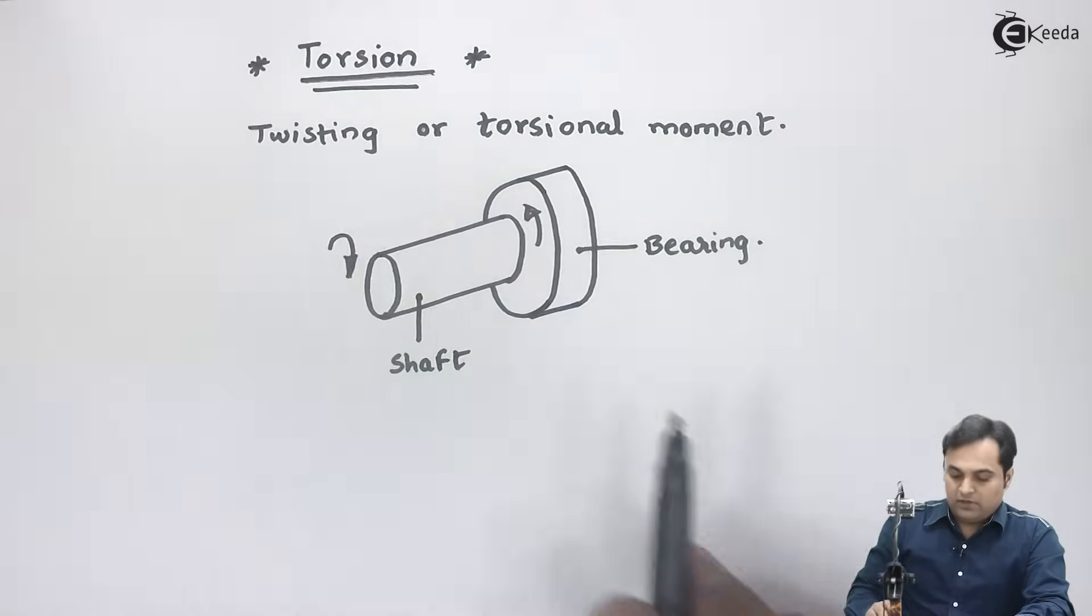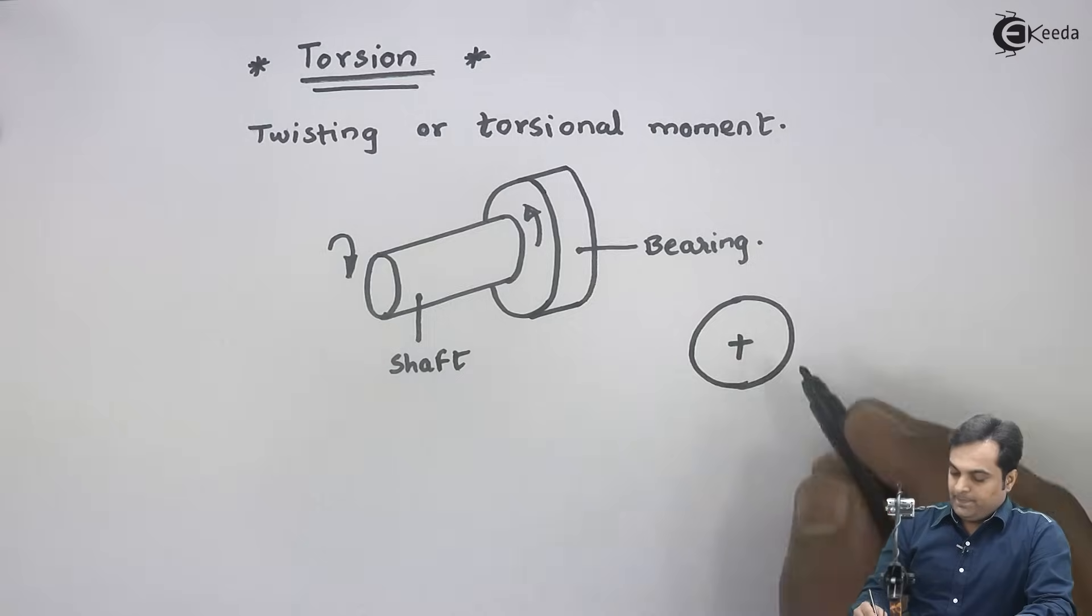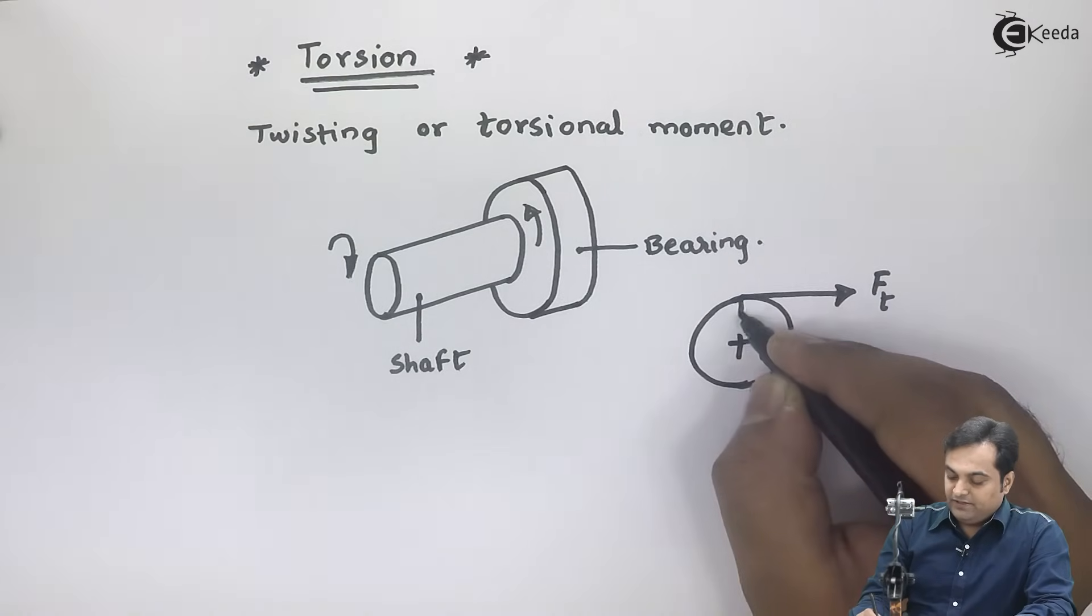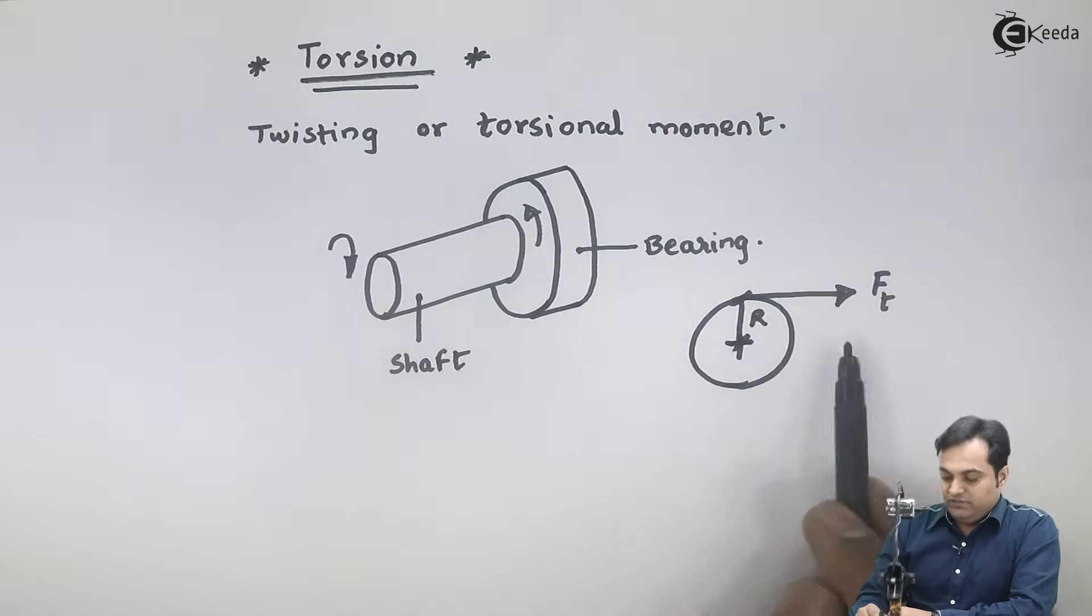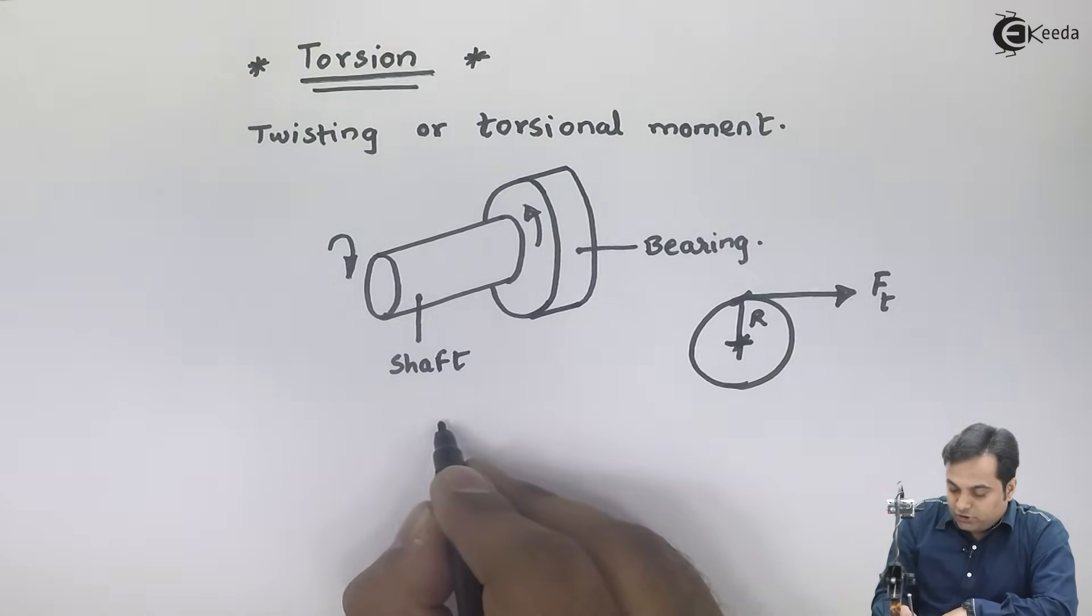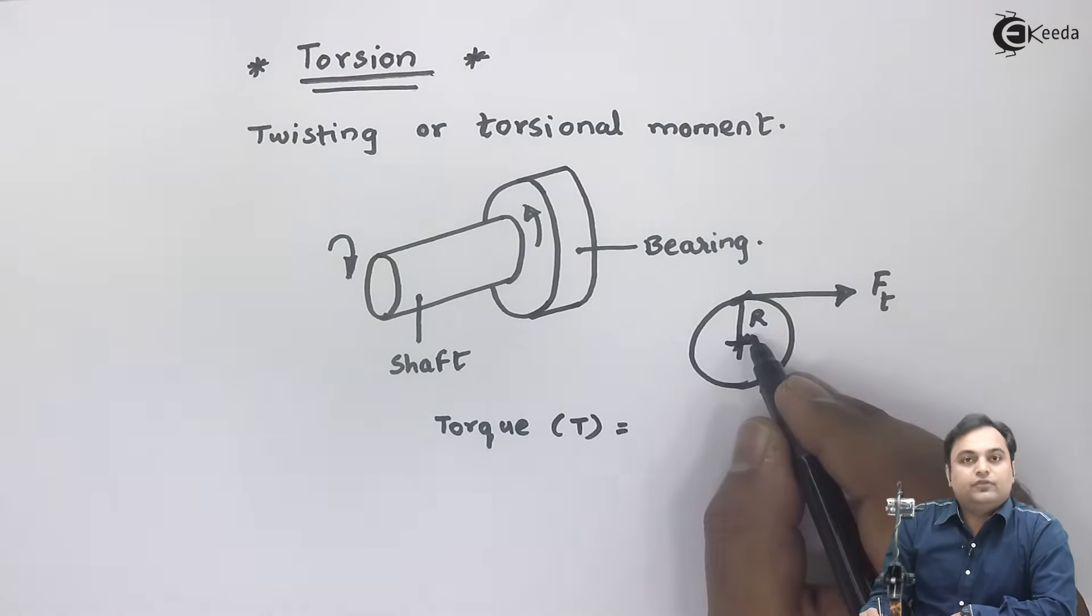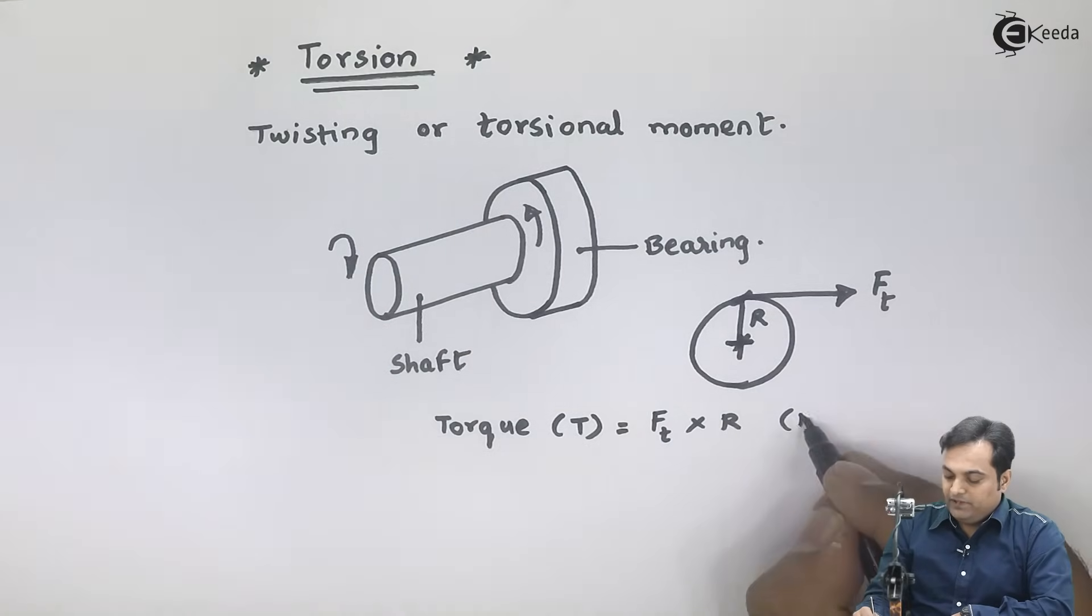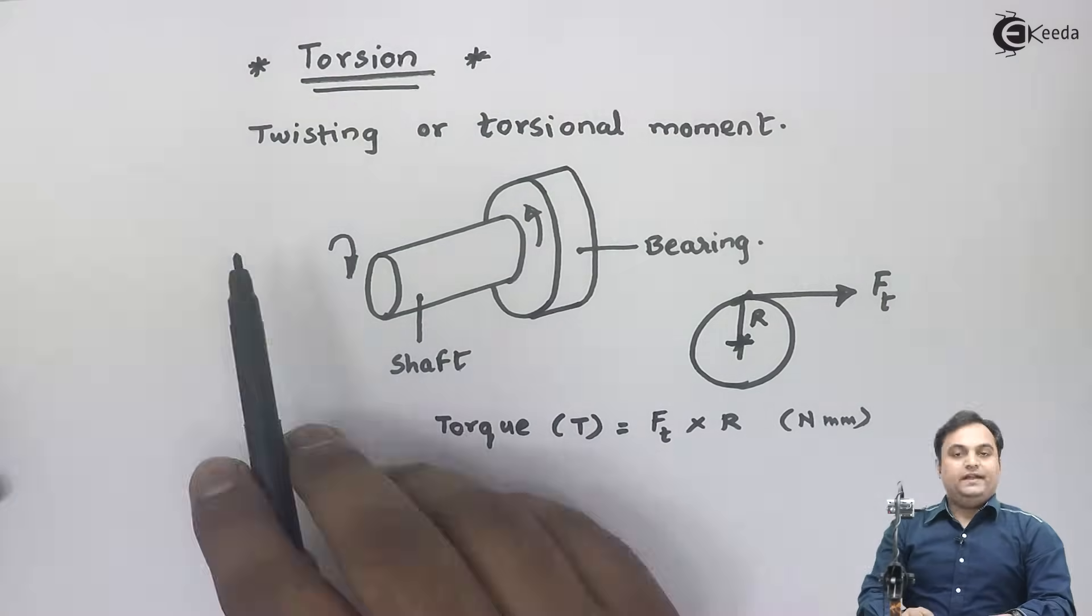Now when we say torsion, torsion can also be called as torque, and torque is the product of tangential force Ft multiplied by the radius of the shaft. Because of the product of Ft into R, this shaft would be rotating. So I can say that torque T is equal to tangential force into radius of the shaft. The unit is Newton for tangential force and mm for radius, so we have the torque in terms of Newton mm.